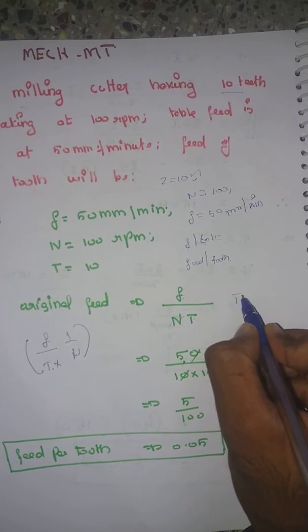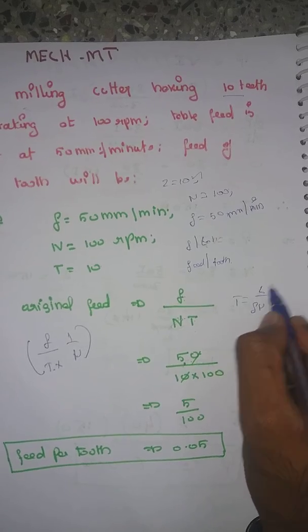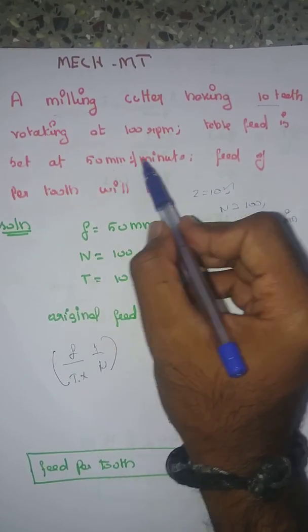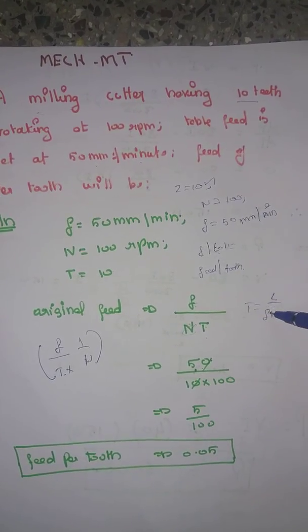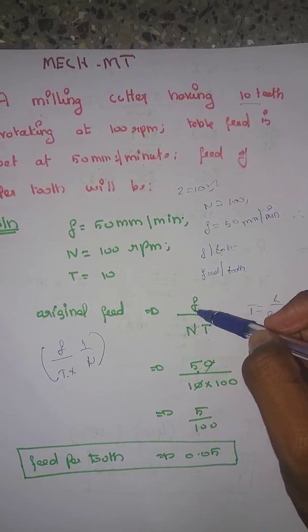The formula is feed per tooth equals feed per minute divided by N times T. We have to convert feed per minute to feed per tooth. That's why we have to use this formula: feed per tooth from feed per rpm.